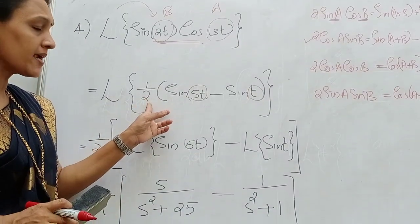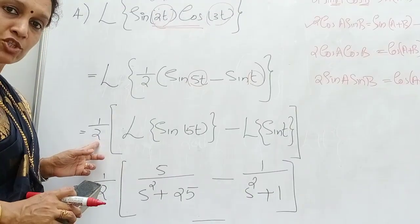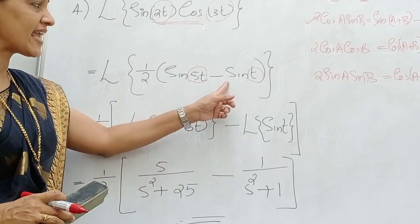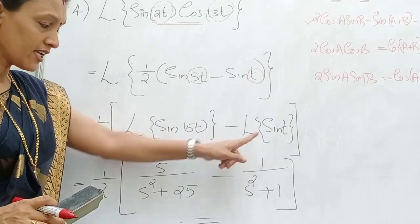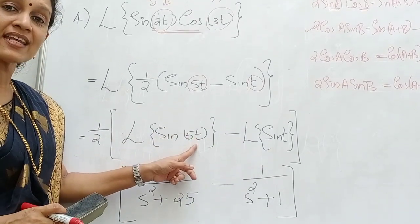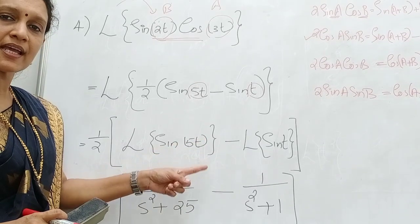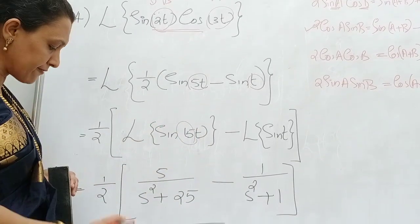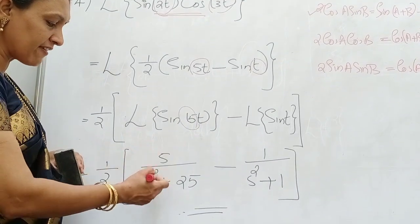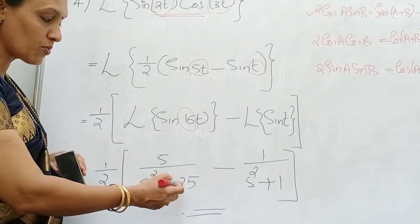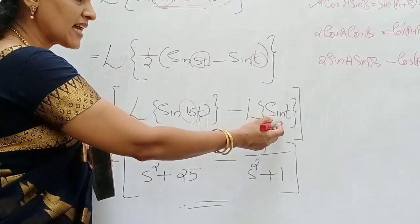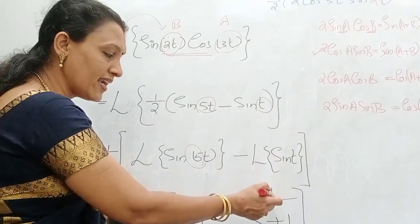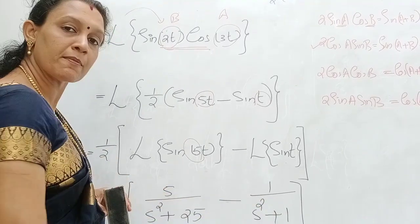Here 1 by 2 is a constant, so take out 1 by 2. Therefore this is 1 by 2 into L of sine 5T minus L of sine T. Now, L of sine aT equals a by S squared plus a squared. For sine 5T, A is 5, so we get 1 by 2 into 5 divided by S squared plus 25 minus L of sine T, where A is 1, giving 1 divided by S squared plus 1.